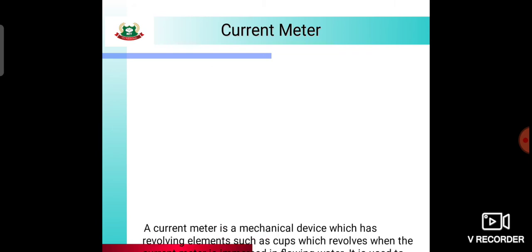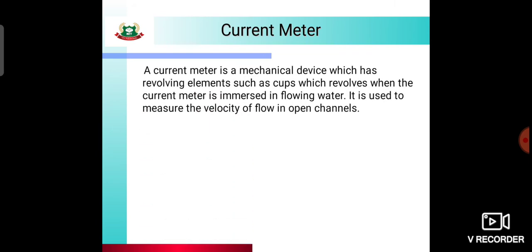The first device is the current meter. The current meter is a mechanical device which has revolving elements such as cups, which revolve when the current meter is immersed in flowing water. It is used to measure the velocity of flow in open channels. Simply put, it is a mechanical device with revolving elements such as cups at the bottom.